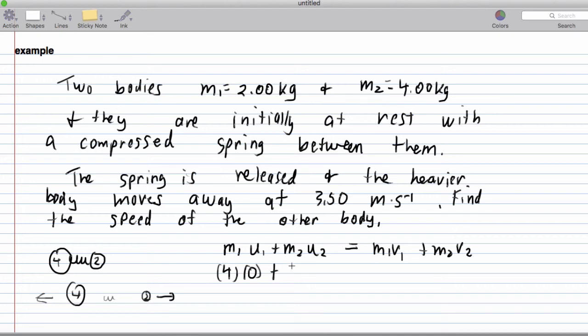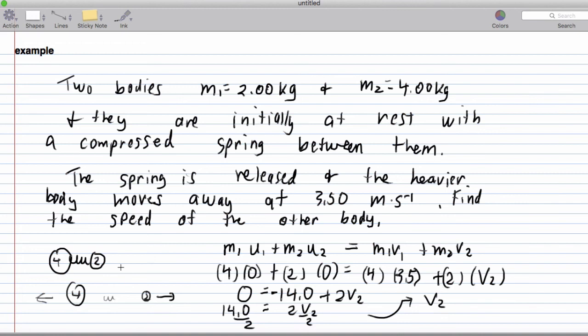It was four times zero to start with. It ends up being 4 going at 3.5 backwards, plus 2 times its unknown speed. This is going to be 0 equals negative 14.0 plus 2v2, and that's negative 14.0. We'll add 14 to both sides. We divide by 2 and we end up getting that v2, the speed of the second object, is 7.00 meters per second.